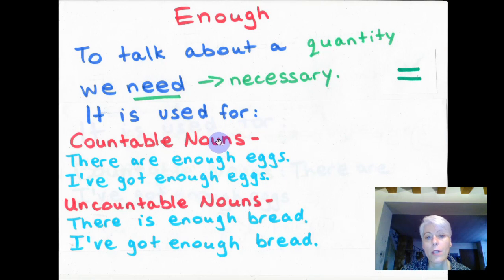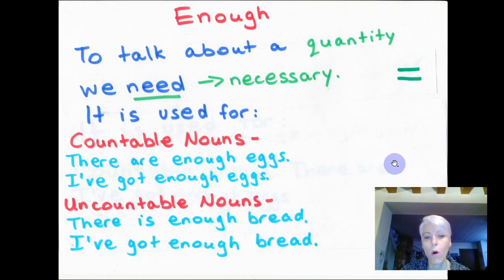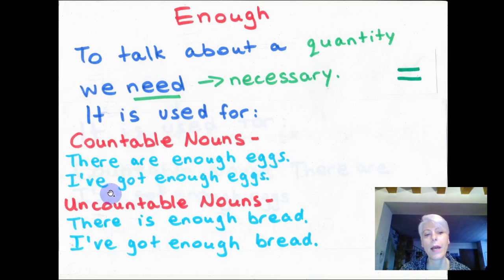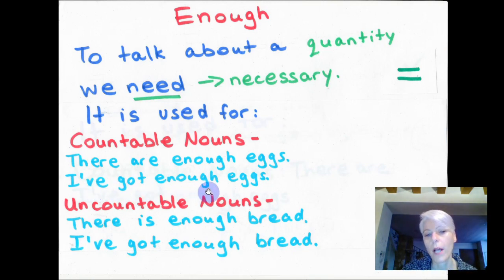Here are some examples using 'enough' with countable nouns. There are enough eggs. I've got enough eggs. Can you see? With countable nouns, we use 'are' and the plural form. And here we have 'have got'. For example: she has got enough eggs.